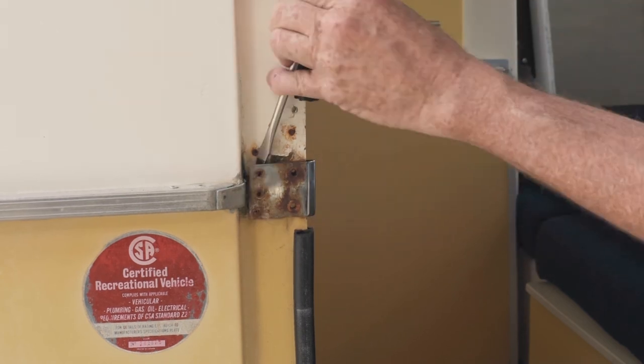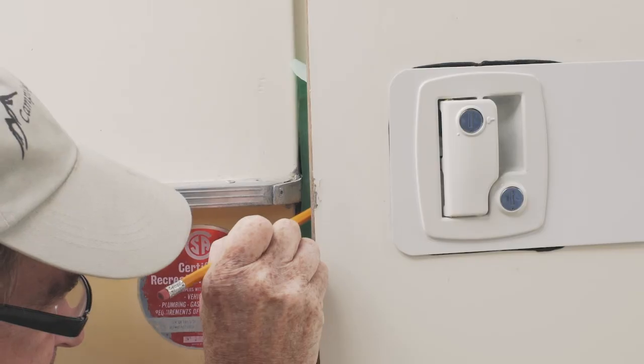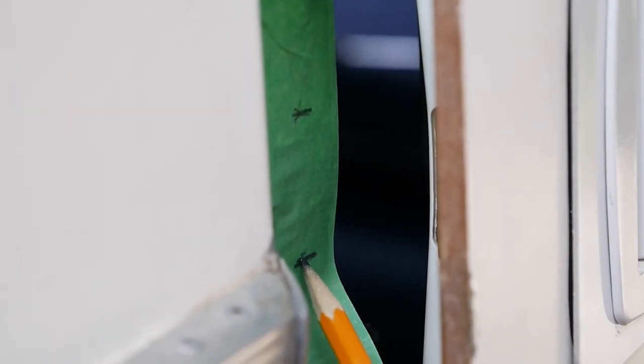Place masking tape along the door jamb. Extend the deadbolt and mark the position of the top and bottom of the latches.